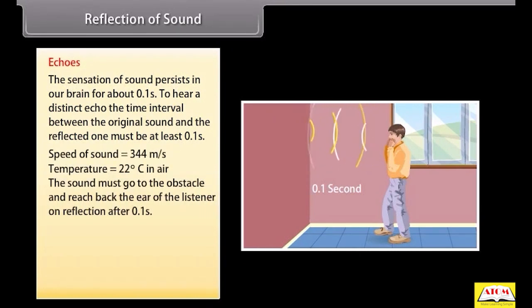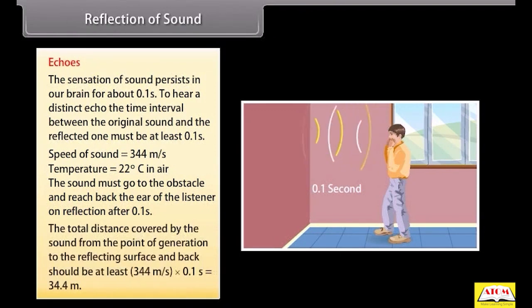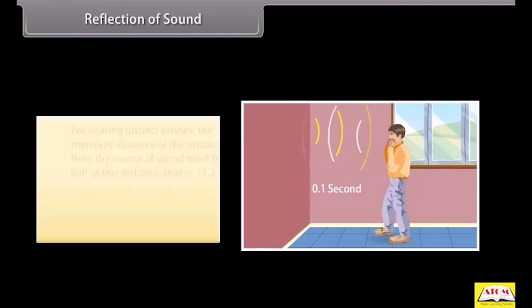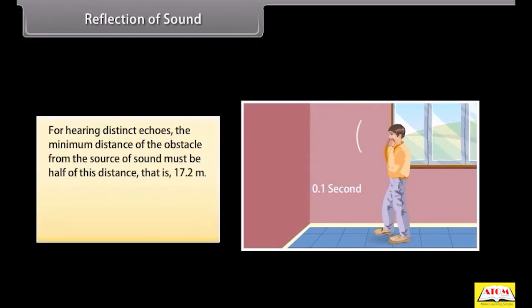If we take the speed of sound to be 344 meters per second at a given temperature, say 22 degrees Celsius, in air, the sound must go back to the obstacle and reach back the ear of the listener on reflection after 0.1 second. Hence, the total distance covered by the sound from the point of generation to the reflecting surface and back should be at least 344 meters per second into 0.1 second, which is equal to 34.4 meters. Thus, for hearing distinct echoes, the minimum distance of the obstacle from the source of sound must be half of this distance, that is 17.2 meters. This distance will change with the temperature of air.